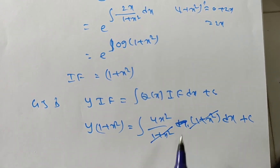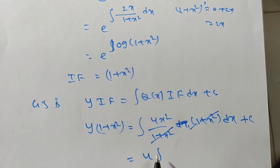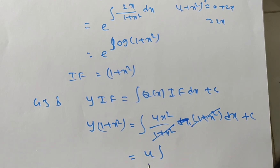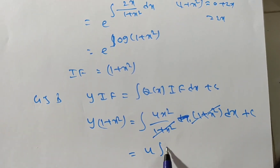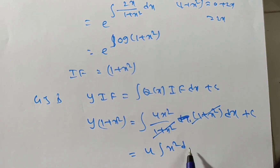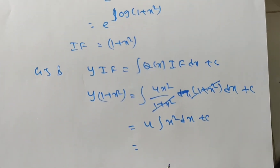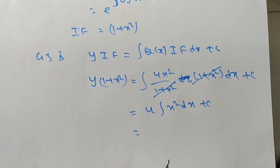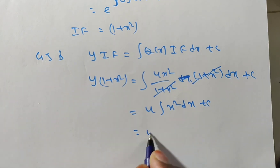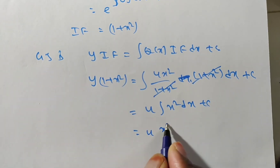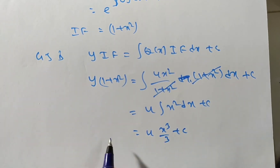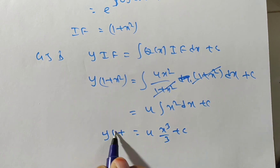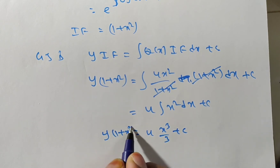The denominator (1 + x²) and numerator (1 + x²) cancel. We then have 4 as a constant which we take outside, giving integral of 4x² dx + c. The integration of x² is x³/3, so we get 4x³/3 + c. Therefore y(1 + x²) = 4x³/3 + c, where c is any arbitrary constant.